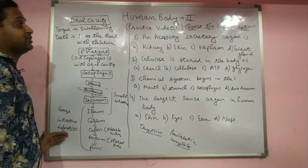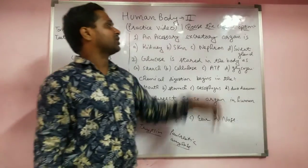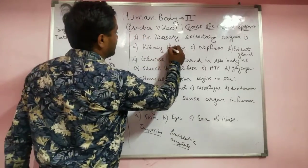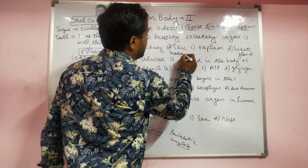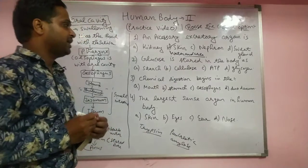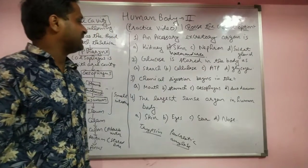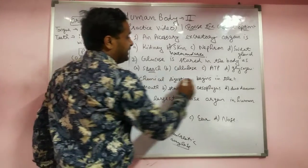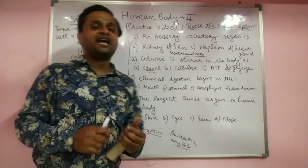Now we do the revision with multiple choice questions. An accessory excretory organ is the skin — water and urea come out through the skin. The stomach is only a digestive organ. Glucose is stored in the body as glycogen — in plants it is stored as starch, but in the body the answer is glycogen.